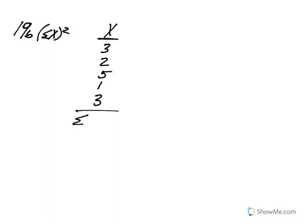So we take the summation here. So the sum of x simply requires that we add up these values. We'll start from the top this time. 3 plus 2 is 5, plus 5 is 10, plus 1 is 11, plus 3 more gives us a value of 14.